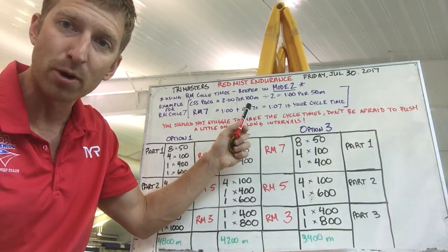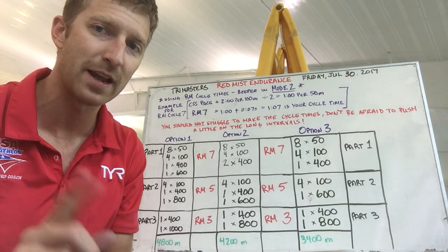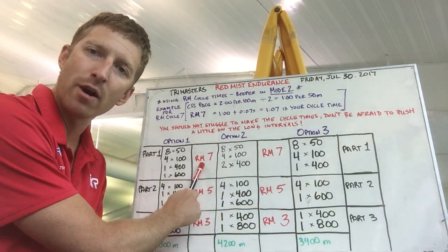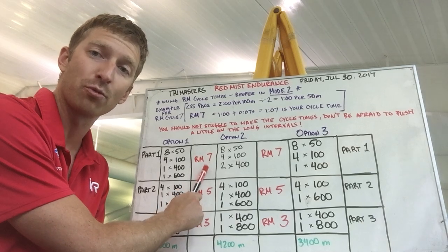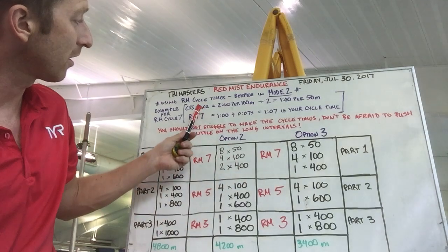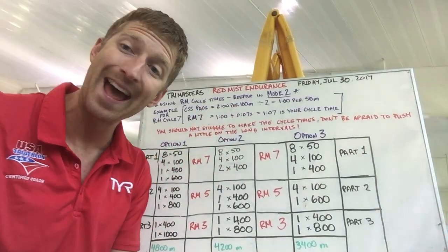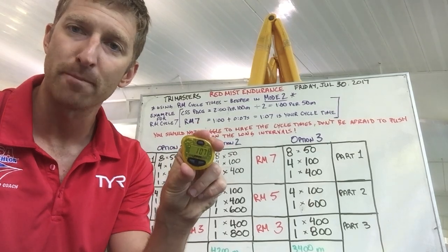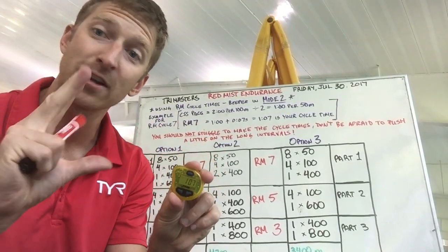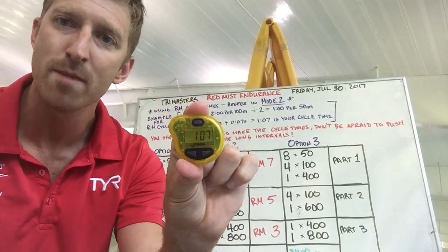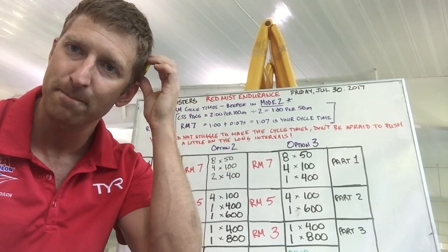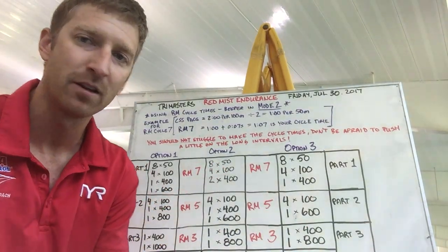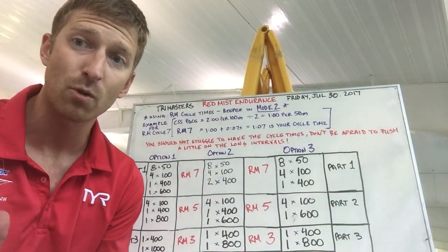Now, one minute per 50 — here's an example. In tomorrow morning's red mist endurance session we're going to start off our first part of the workout at RM7, meaning the cycle time is RM cycle seven. We take your CSS pace, divide by two, then add seven seconds — so that's one minute seven seconds. We take your tempo trainer pro, flip it into mode two by pushing and holding the top button until it flashes a two, and you can see right there I have it set to one minute seven seconds.